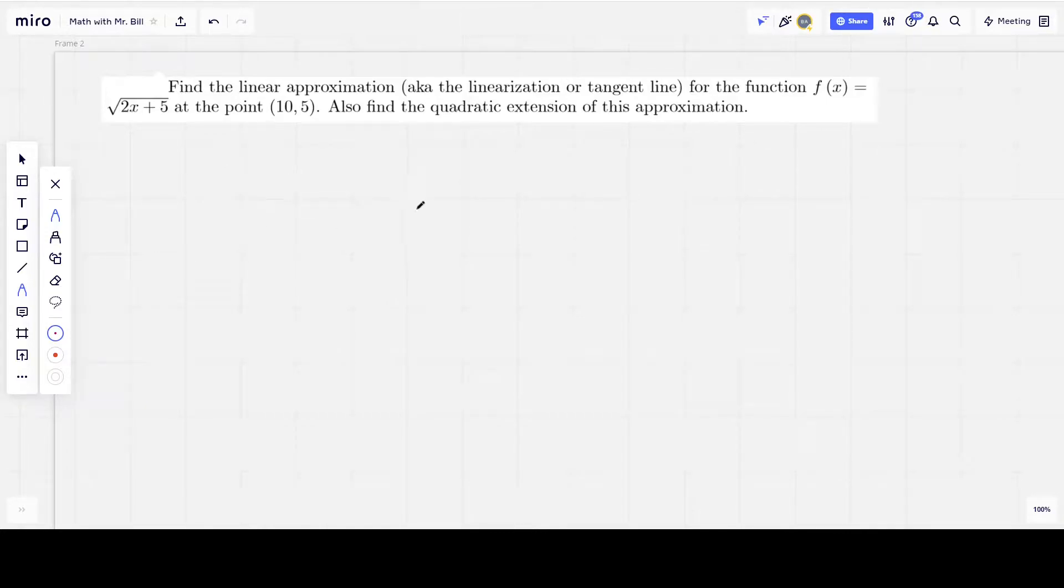Today we're going to be looking at finding the linear approximation and quadratic extension for a given function. The given function here is f(x) equals the square root of 2x plus 5, and we're going to find the linearization, or the linear approximation, or the tangent line at (10, 5). So, let's jump right into this.